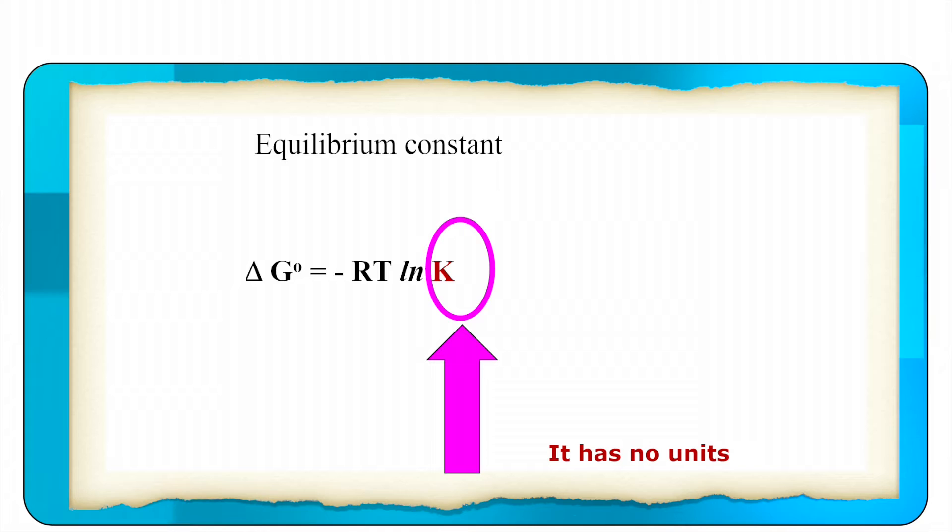But ln K, again here it is a question of dimension. K cannot have any units. Because K is a number and that is why it should be kept in mind that it will have no units. Only then we will be able to take its logarithm. So these are two very common misconceptions.